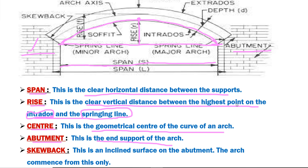The next definition is skewback. Skewback is an inclined surface on the abutment from where the arch springs.